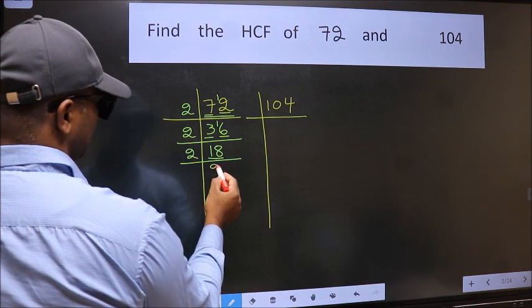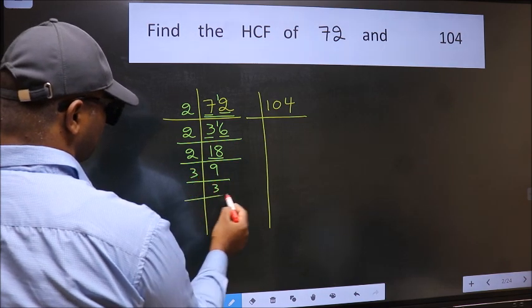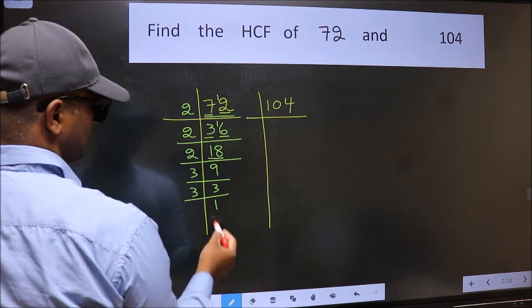Now 18 is 2 times 9. 9 is 3 times 3. 3 is a prime number, so 3 times 1 equals 3.